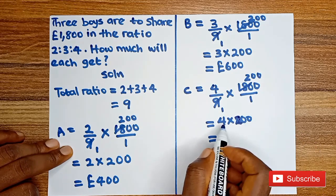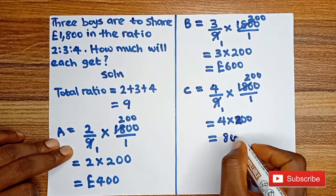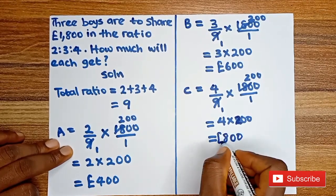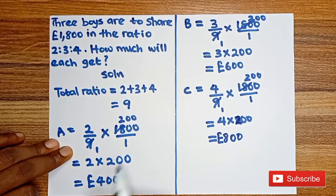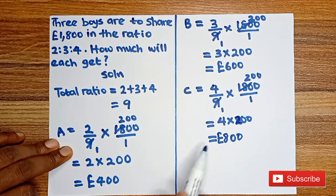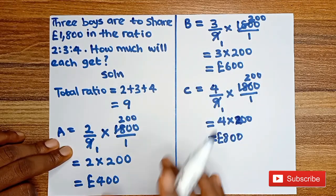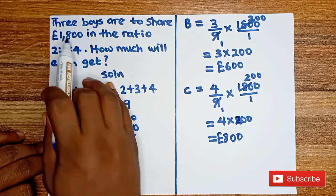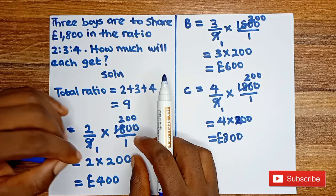This is 200, so 4 multiplied by 200 is going to give us £800. So this means Boy A got £400, Boy B got £600, and Boy C got £800. When you add all this amount together, we are going to get £1,800, which was the total amount to be shared.